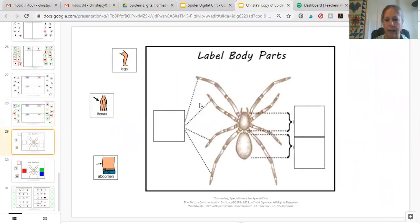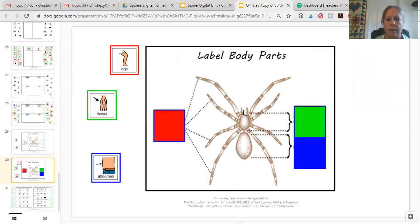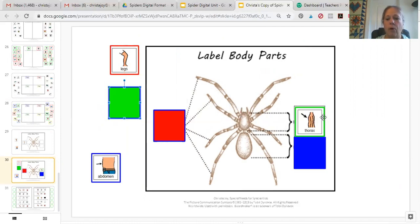Next is the labeling activity of the spiders. So they're just going to drag these into the correct square. For students that need more support, I made this activity so that they could have a little bit more help with that being able to see that piece going into the right color.